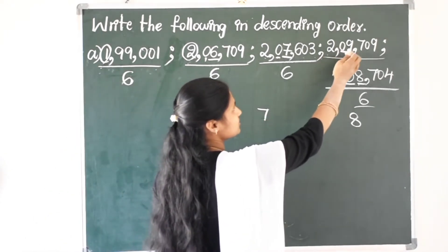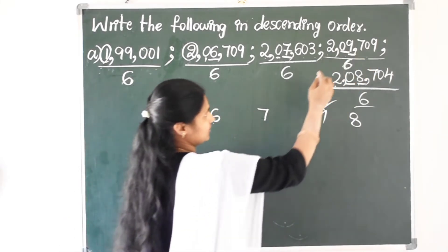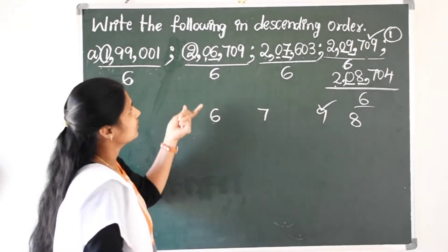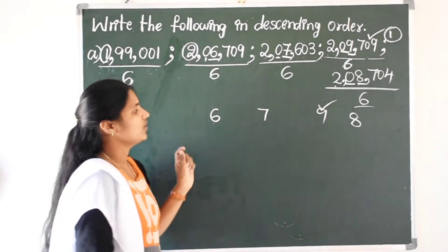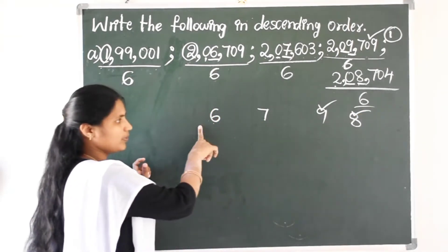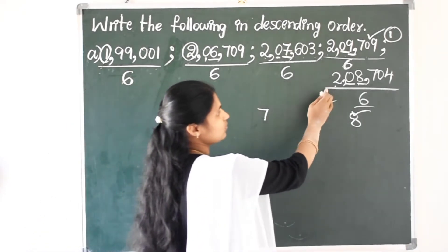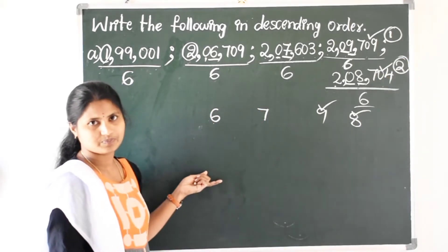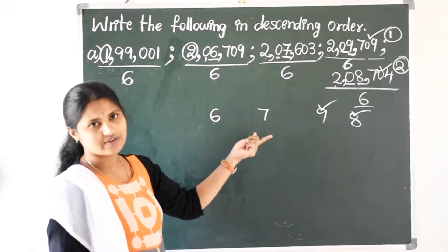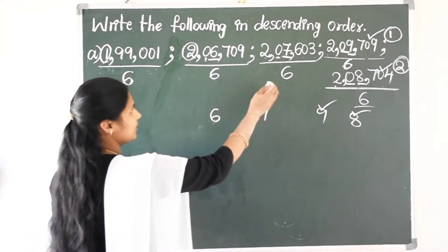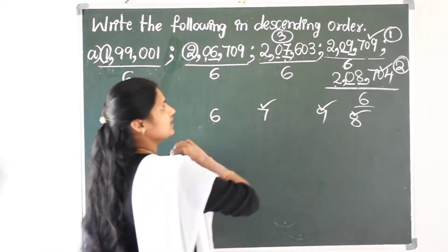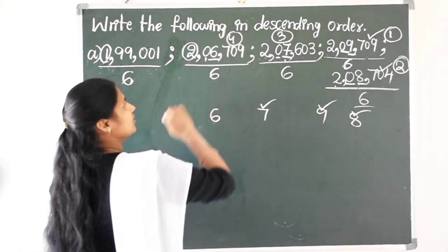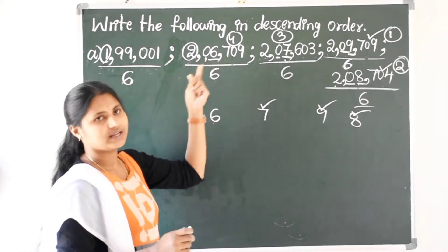So, we can say 2,09,709 is bigger. We can write this number in first place. Next check: 6, 7, 8. 8 is the bigger number compared to 6 and 7. So, we can say 2,08,704 — we can write this number in second place. Next is 6 and 7. 7 is the big number, that is 2,07,603. We can write this number in third place. Next is 6, so 2,06,709.